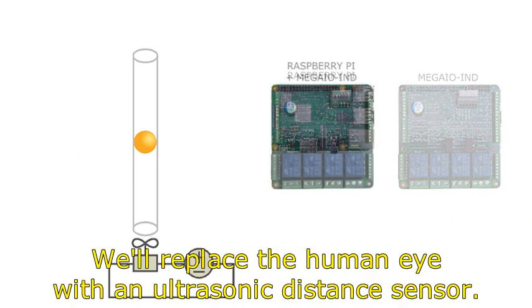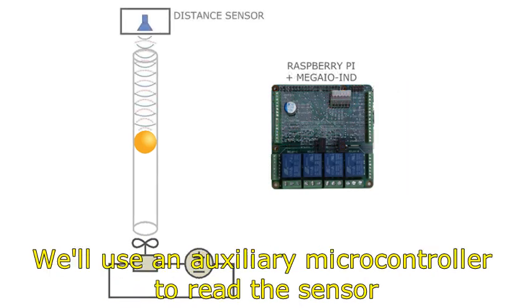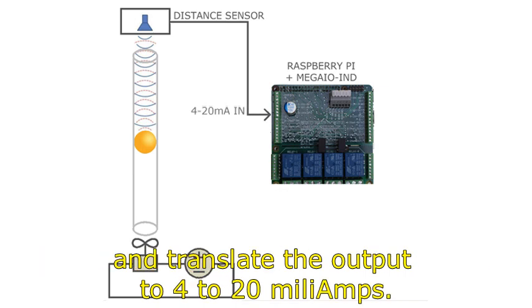We'll replace the human eye with an ultrasonic distance sensor. We'll use an auxiliary microcontroller to read the sensor and translate the output to 4 to 20 milliamps.